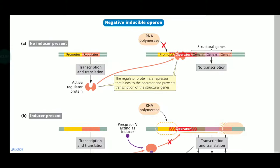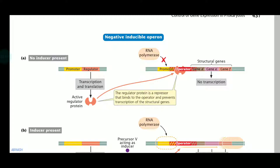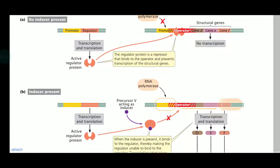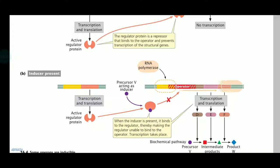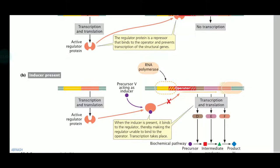So here is the inducer-present and no-inducer-present condition for your inducible operon. The inducible operon means we will induce the formation of protein. The negative inducible operon means it is about the absence of the inducer — in that absence, there will be no formation of the required protein.